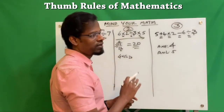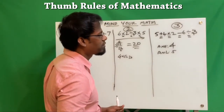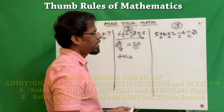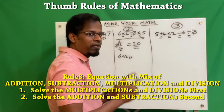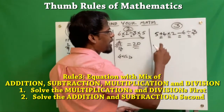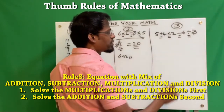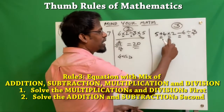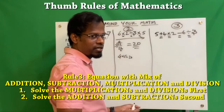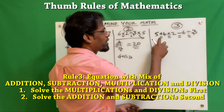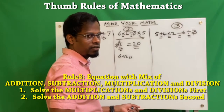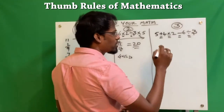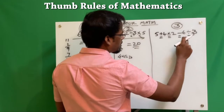So let's see what the right method is. That is where Rule 3 comes into play. Whenever you see all four operations — addition, subtraction, multiplication, and division — you always do the multiplication and division first, and then focus on the addition and subtraction.